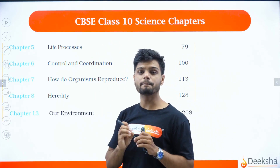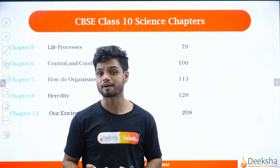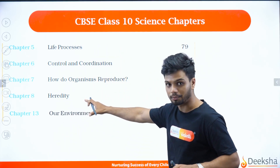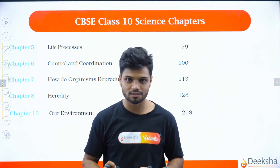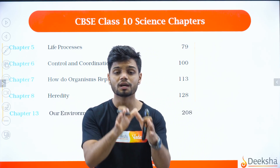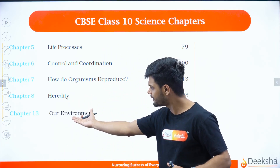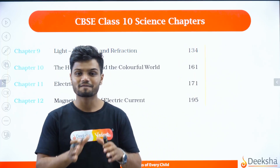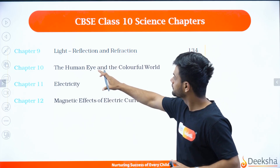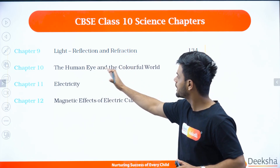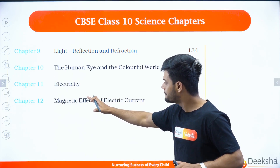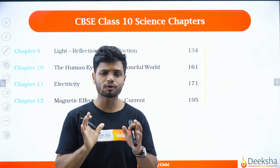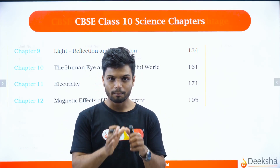Coming to biology, we have in total five chapters: life process — one of the biggest chapters in your class 10th — then we have control and coordination, heredity chapter, and our environment. Then we have physics: the light chapter, that is reflection and refraction, the human eye and the colorful world, electricity, and finally magnetic effects of electric current. This is the basic gist of your class 10th science syllabus.